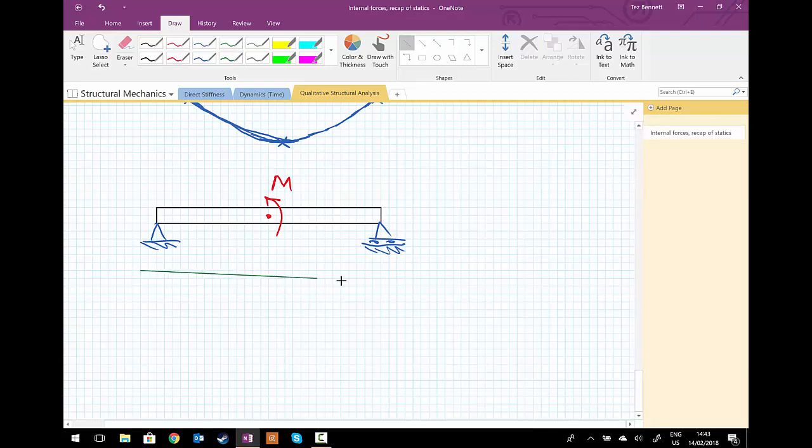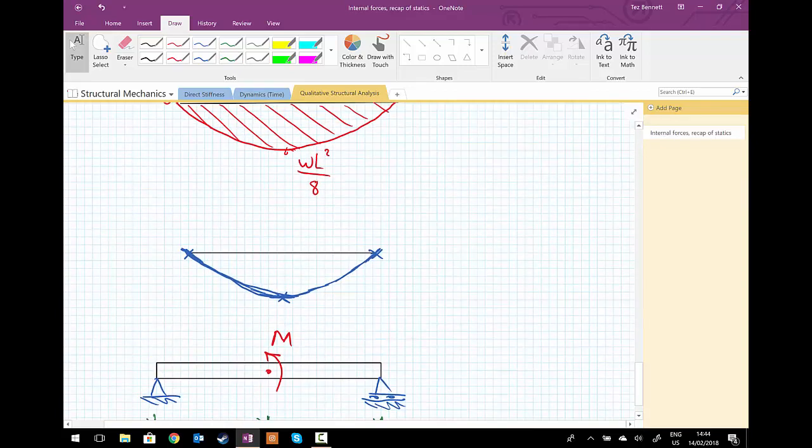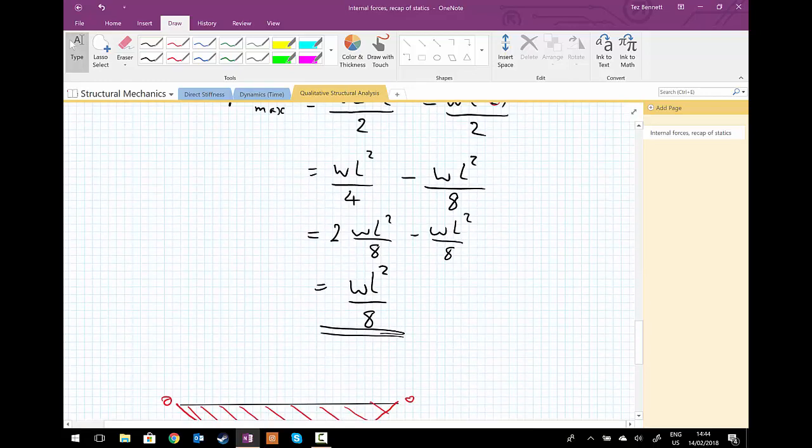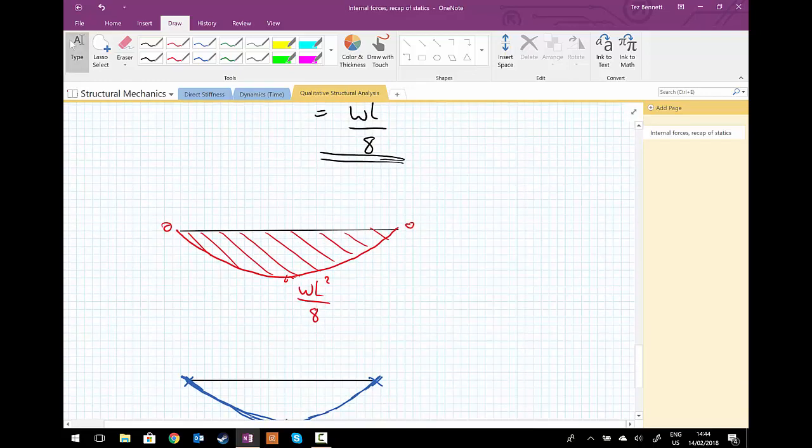So let's dimension that up. And that there is L upon 2. That is L upon 2. So in the previous examples, didn't mention it as we went along, but in all the previous examples, I drew my bending moment diagram underneath. Some might consider that to be upside down.